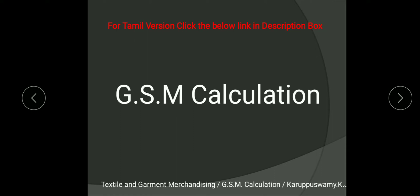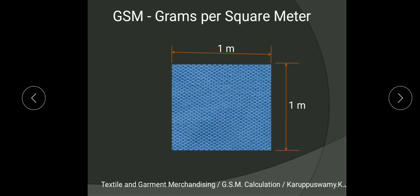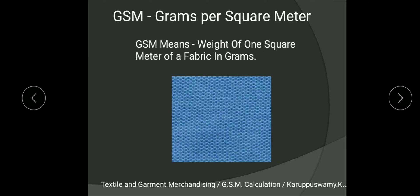Let us discuss the meaning of GSM. GSM stands for grams per square meter. Simply, you take a fabric of length 1 meter and width 1 meter — that is called 1 square meter. When you weigh this fabric you will get the GSM. For example, if that fabric weighs 180 grams, then the GSM of the fabric is 180.